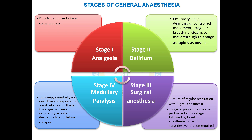Stage 3 is the actual stage under which surgical procedures are done. At this stage, irregular breathing returns to regular respiration, ranging from light to deep anaesthesia. Surgical procedures are performed under this stage and supported ventilation is required. Stage 4 follows stage 3 if the concentration or dose of anaesthetic is not carefully monitored — this is the stage between respiratory arrest and death due to circulatory collapse.